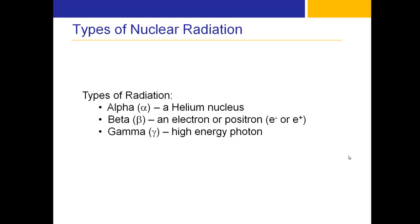So there are three basic types of nuclear radiation. There's alpha radiation, which is basically a helium nucleus — two protons and two electrons. You have beta radiation, beta-plus or beta-minus, which is basically an electron or a positron. And then you have gamma radiation, which is a high-energy photon.